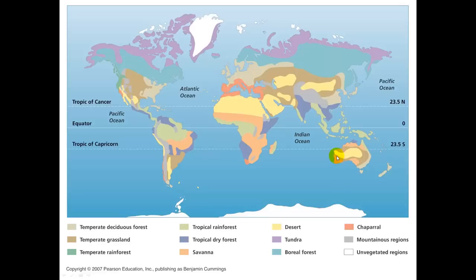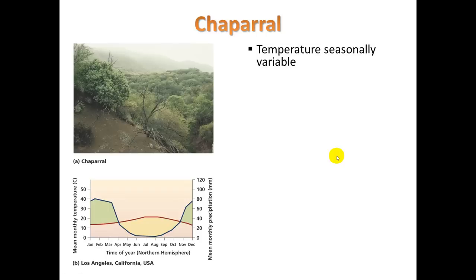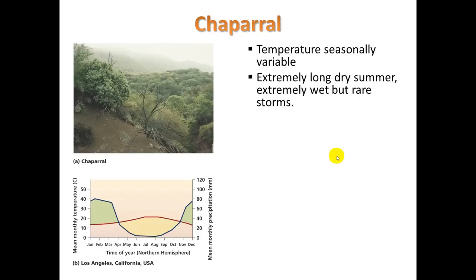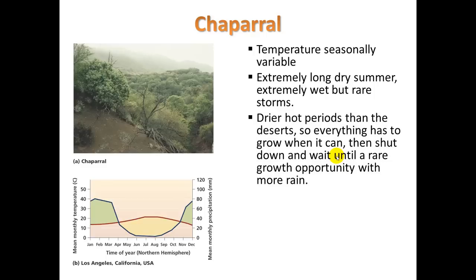There are some tips down here in Australia as well. We have a seasonably variable temperature throughout the year, but extremely long dry summers. We do get storms in the wintertime. There are drier hot periods than the deserts, so everything has to grow when it can, then shuts down and waits for a rare growth opportunity with more rain. It's a striking statement that this area is drier than deserts in the summertime — we virtually get no rain in summer. But many deserts throughout the world actually have two rainy seasons, one in winter and one in mid to late summer.